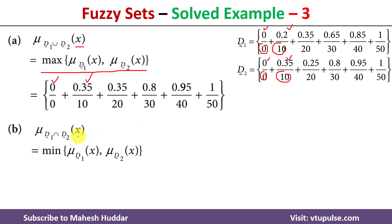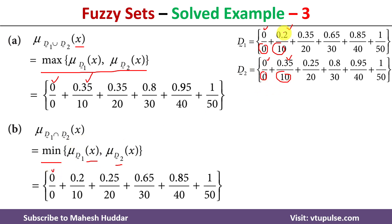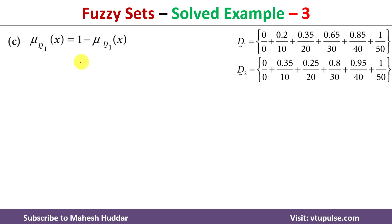Now for the intersection of D1 and D2: we take the minimum of the membership value of x in D1 and D2. In the previous case we considered the maximum; here we consider the minimum. For element 0, both fuzzy sets have 0, so the minimum is 0. For element 10, the membership values are 0.2 in D1 and 0.35 in D2, so 0.2 is the minimum. For element 20, between 0.35 and 0.25, the minimum is 0.25, and so on for the remaining elements.